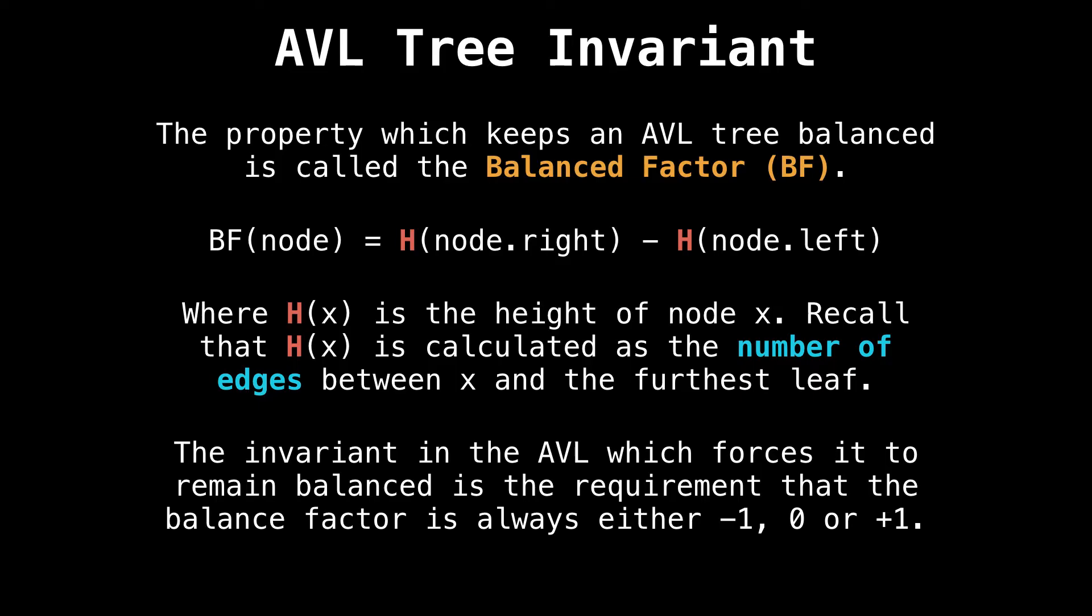The height of node x is calculated as the number of edges between x and the furthest leaf. So if your tree only has one node, the tree has height zero, not height one, because there are no edges. The invariant on the AVL tree that keeps it balanced is forcing the balance factor of every node to be either minus one, zero, or plus one.